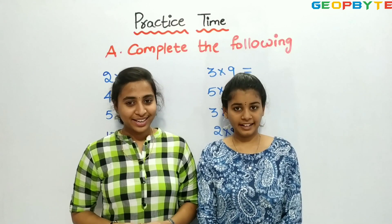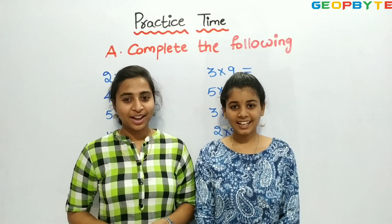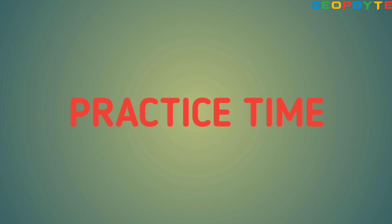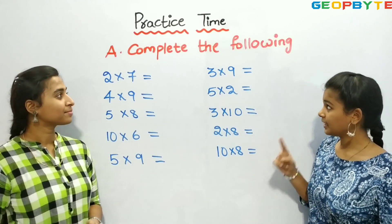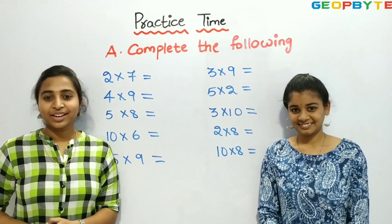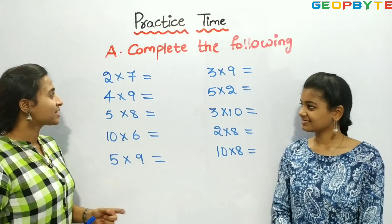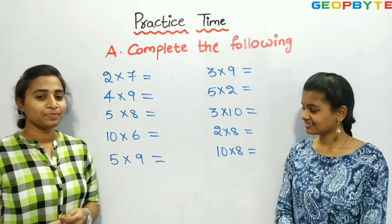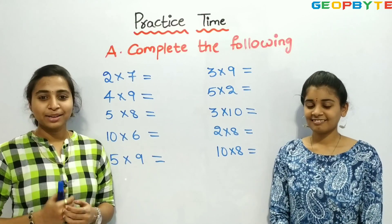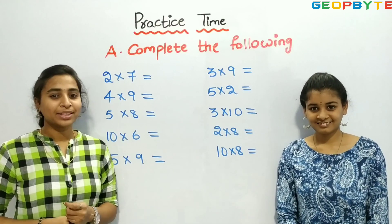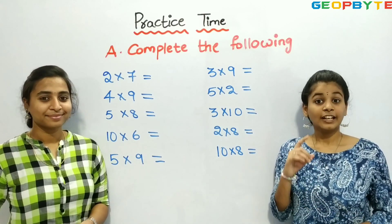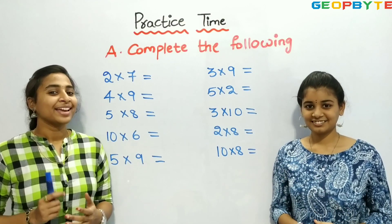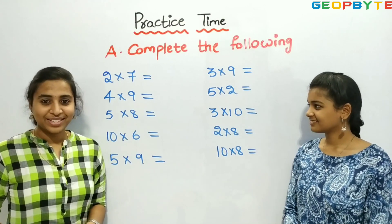Now, it is practice time. Children, now we need to complete the following. The first one is 2 into 7, also called as 2 times 7. What is the answer? 2 sevens are 14. Yes, 2 sevens are 14.